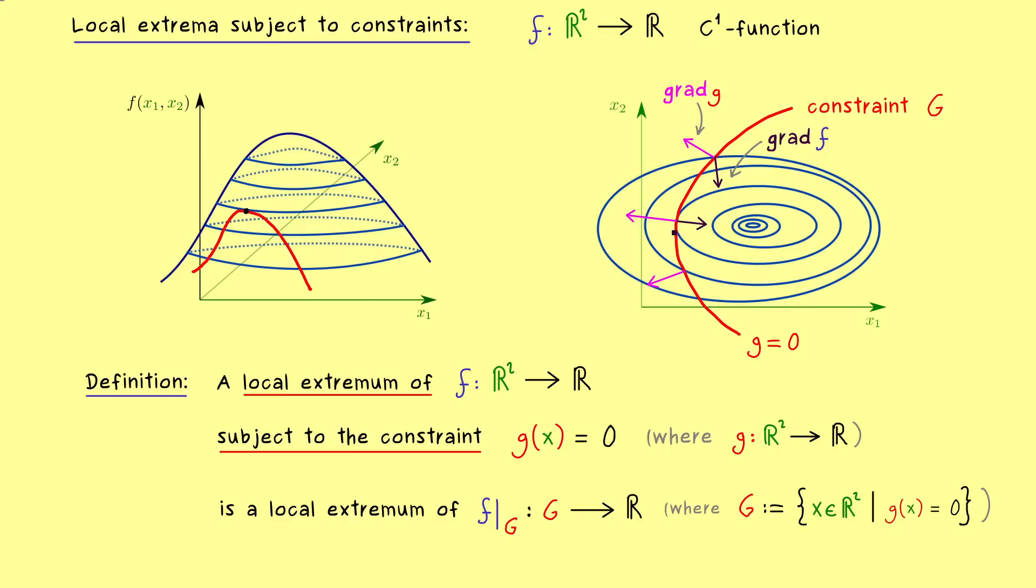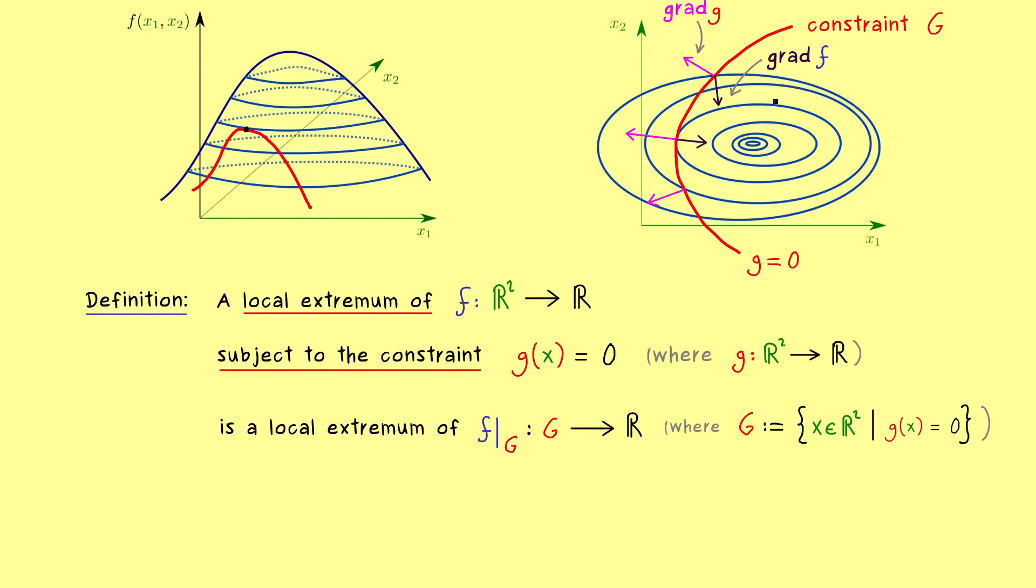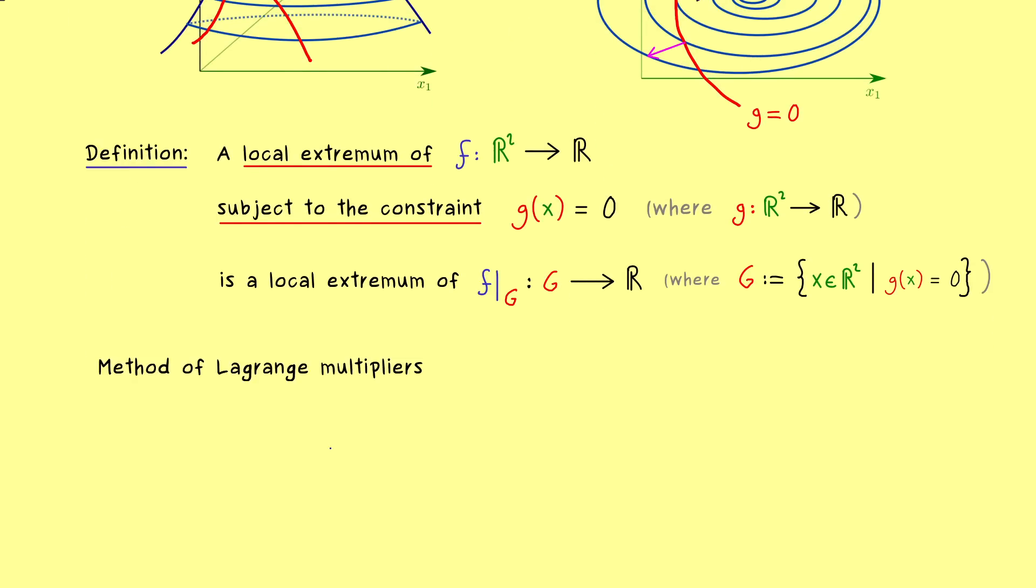And there we see, we cannot increase the value of the function f here by changing the point a little bit in any direction. In other words, there we have found our local maximum. It's exactly the point here on the left hand side that has the maximal altitude. Hence, now we have found our new necessary condition for local extrema. Namely, we have to find the points where the two gradients lie on the same line. Or more formally, you would say the gradient of g spans a subspace and the gradient of f should lie in the subspace. And exactly this necessary condition for local extrema is usually called the method of Lagrange multipliers.